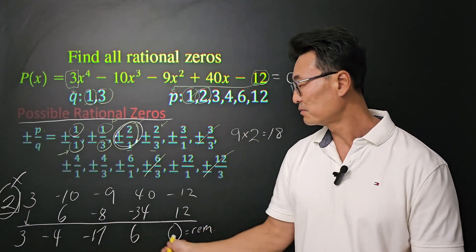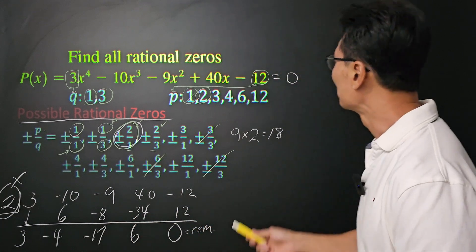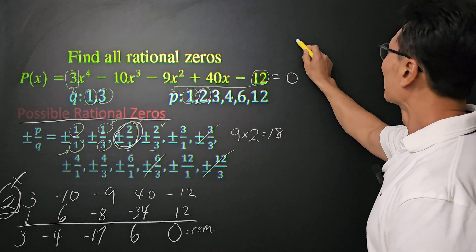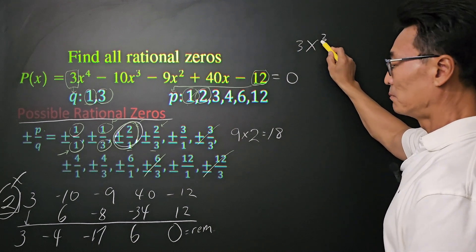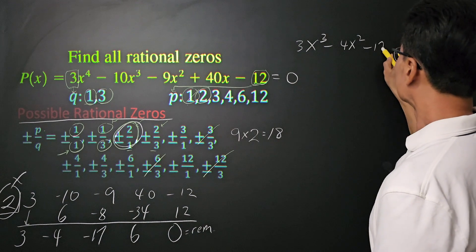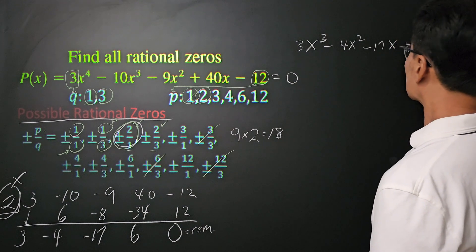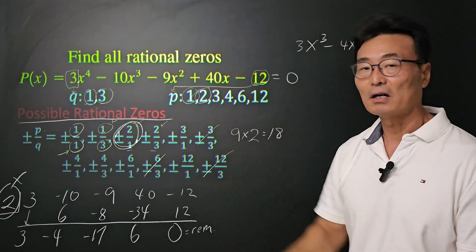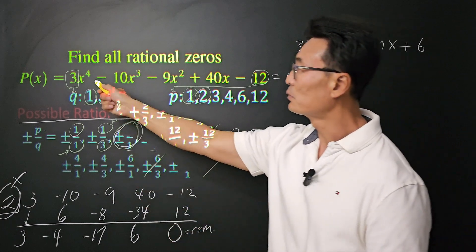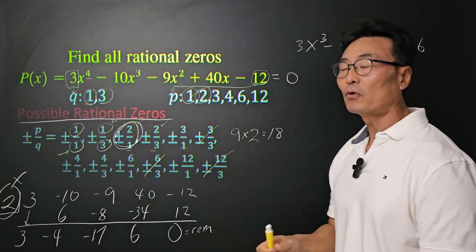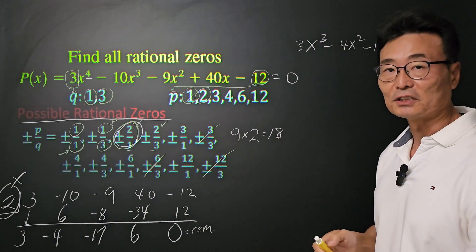Then, the 3, negative 4, negative 17, and the 6 we have, it means this: We have 3x cubed minus 4x squared minus 17x plus 6 will be a factor of that function. Notice, we started with the function of degree 4. We're now down to a degree of 3 or cubic function.